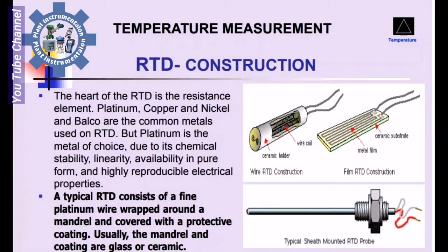RTD Construction: The heart of the RTD is the resistance element. Platinum, Copper, Nickel, and Balco are the common metals used in RTDs. But Platinum is the metal of choice due to its chemical stability, linearity, availability in pure form, and high reliable electrical properties.